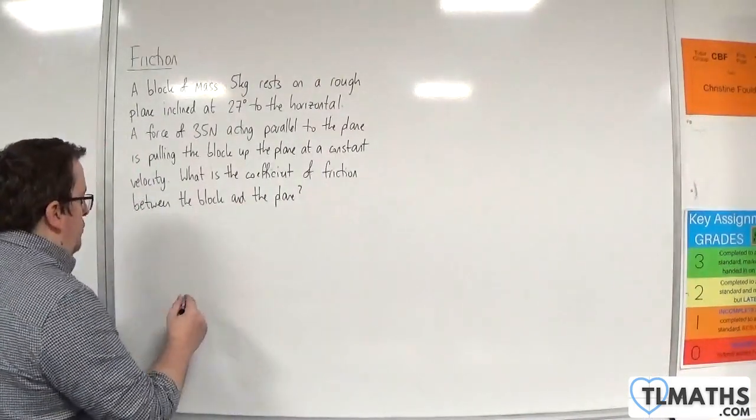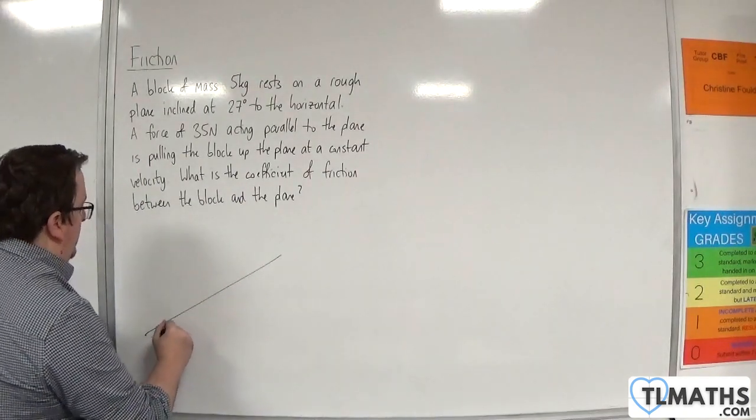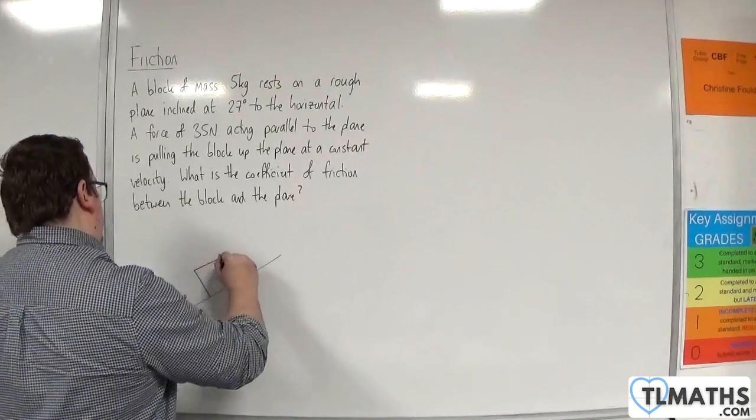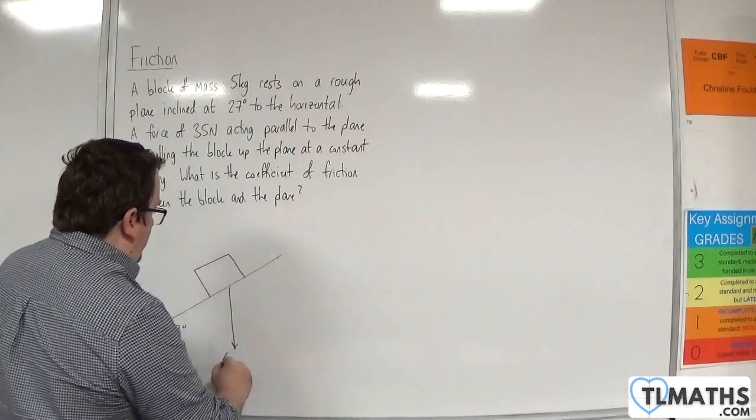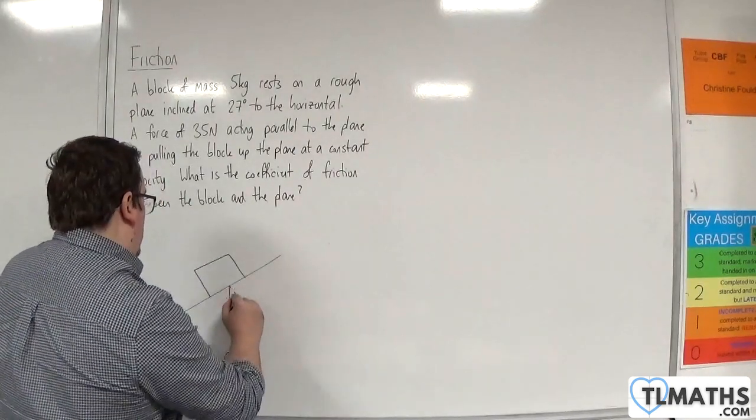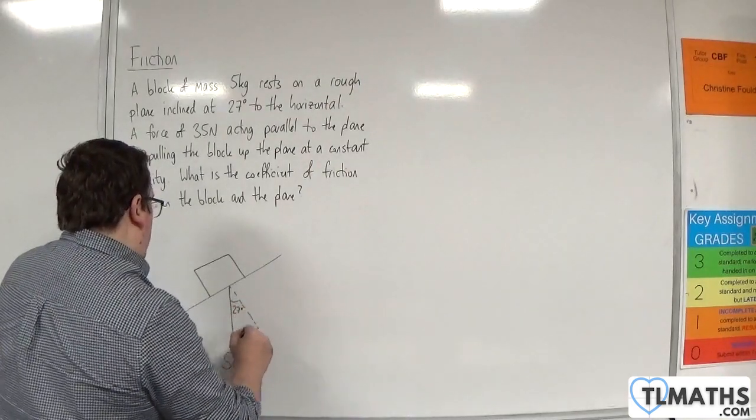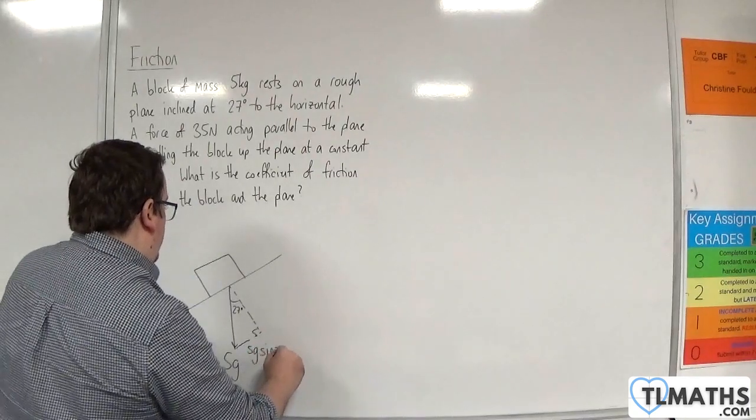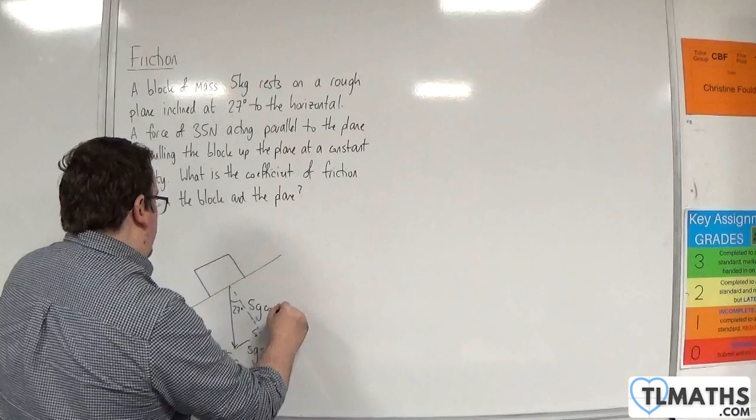Okay, we'll draw a diagram. So here is my slope. My angle is 27 degrees. Here is the block. It has a mass of 5 kilos, so a weight of 5g. We'll complete the triangle here. This angle is 27 degrees, so this is 5g sine of 27 degrees, and this is 5g cosine of 27 degrees.